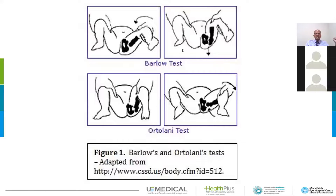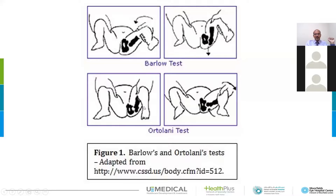To remember the tests: OR for Ortolani Reduces, and DD for Barlow's Dislocates. In Barlow's, you adduct the hip and push back — the head of the femur will come out with a clunk. In Ortolani, you are abducting the hip and pushing up on the ischial tuberosity region, so the greater trochanter and the head of the femur will reduce back.